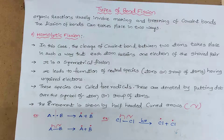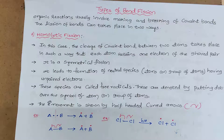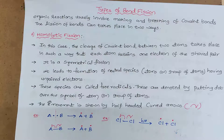Good morning students. Today we are going to discuss the topic: types of bond fission. Generally, during a chemical reaction, the old bonds are broken and new bonds are formed. The cleavage of bonds can take place in two ways in organic chemistry: one is homolytic fission and another one is heterolytic fission — that means homolytic cleavage and heterolytic cleavage.